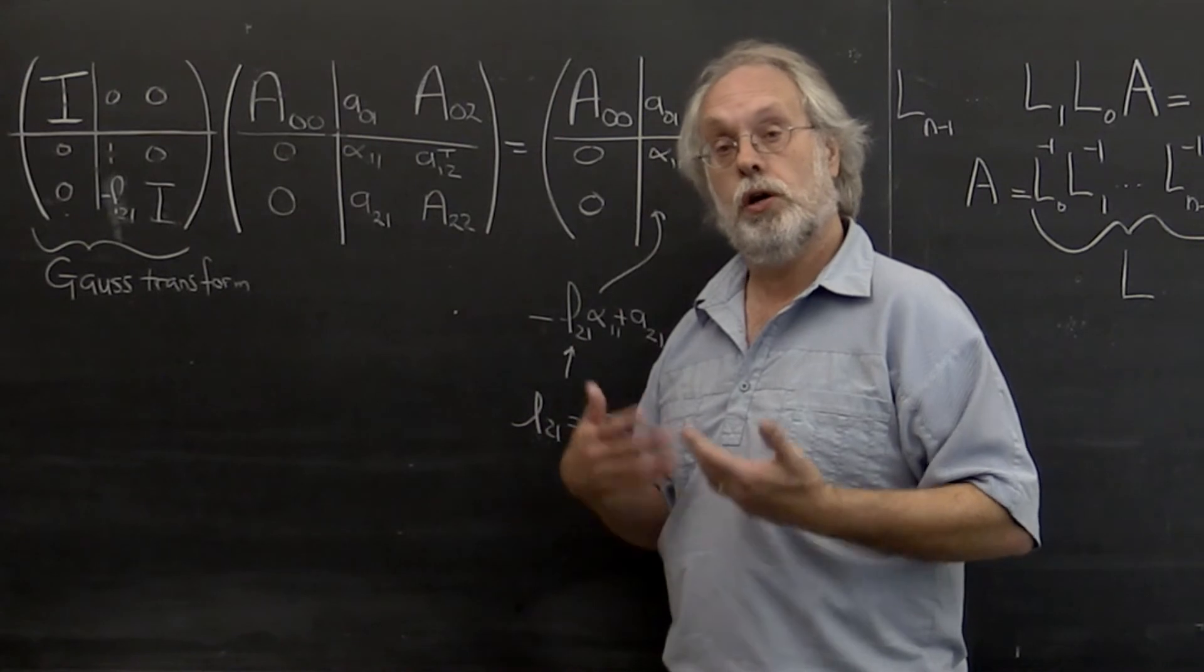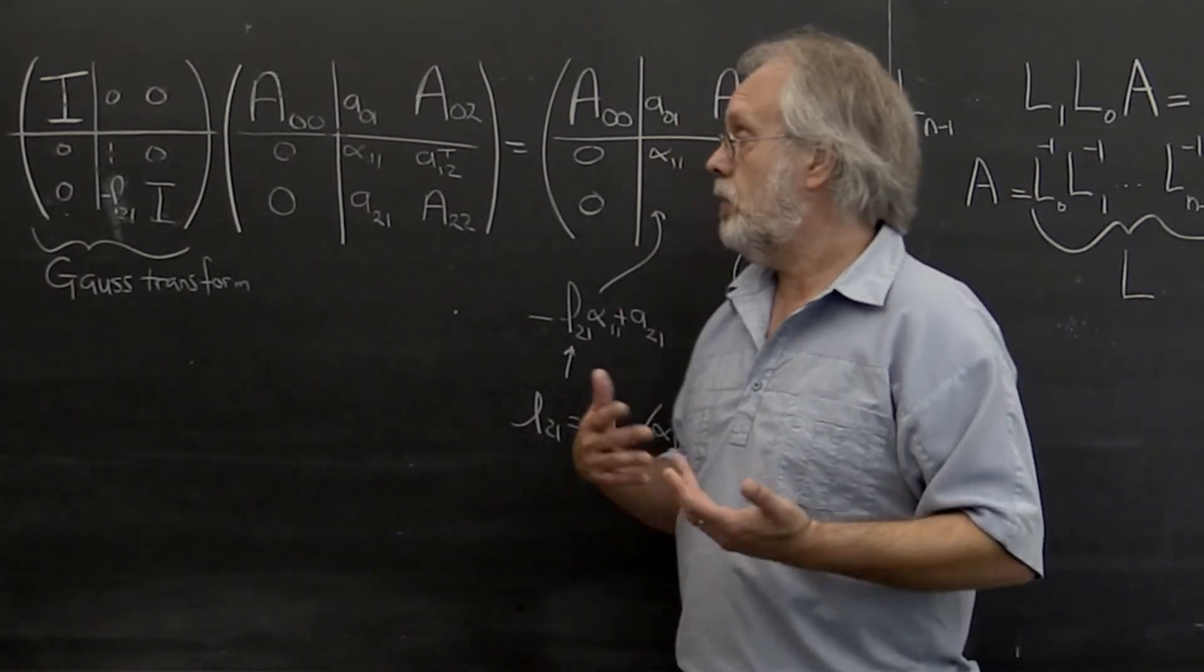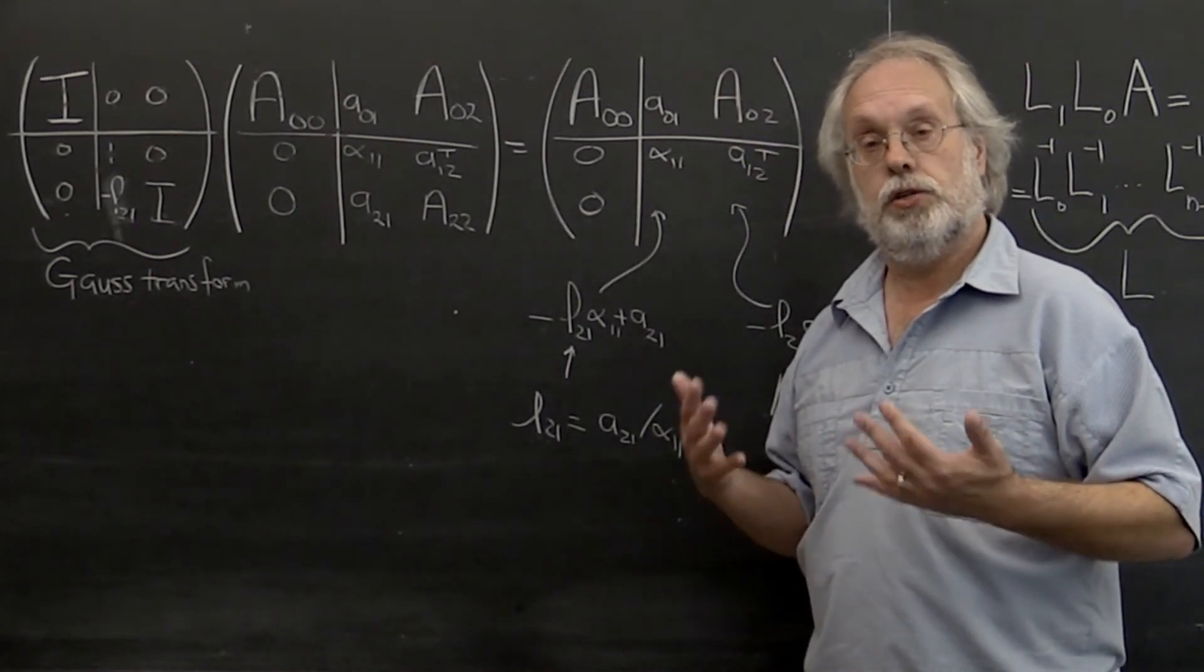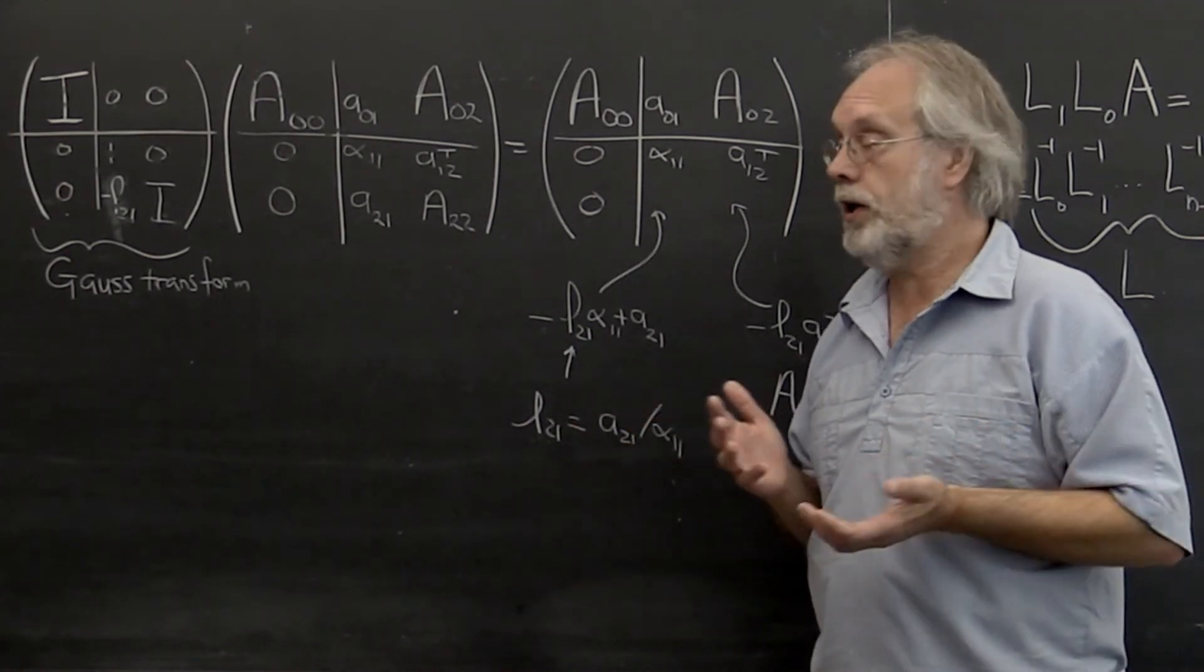Now that's called row pivoting or partial pivoting. And what we're going to see is that you can modify LU factorization to include row pivoting or partial pivoting, whichever you prefer calling it.